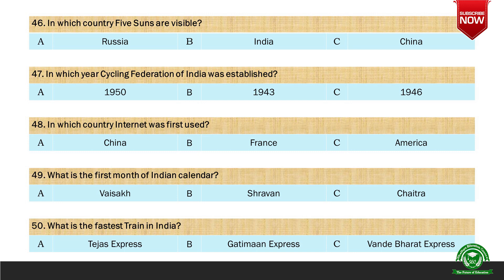Next question: What is the first month of the Indian calendar? Options are A. Vaishak, B. Shravan, and C. Chaitra. And the correct option is C. Chaitra.